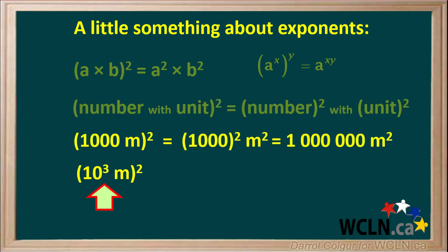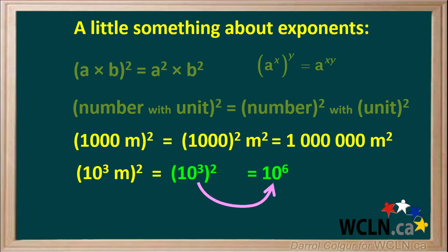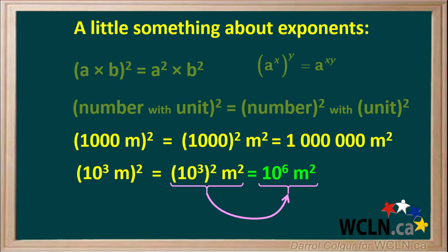Now we'll do the same question using exponents. Ten to the third meters, squared, is equal to ten to the third, squared, meters squared. Ten to the power three squared is the same as ten to the power of three times two, or ten to the power six. So we get ten to the sixth meters squared for our answer, which is the same as one million meters squared.